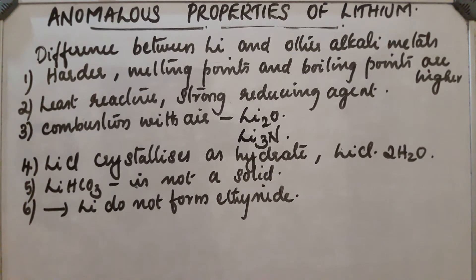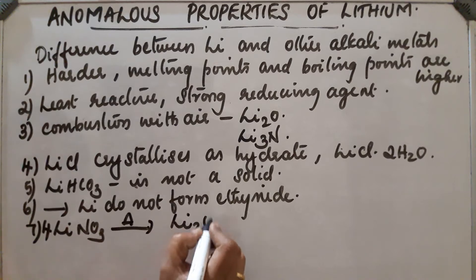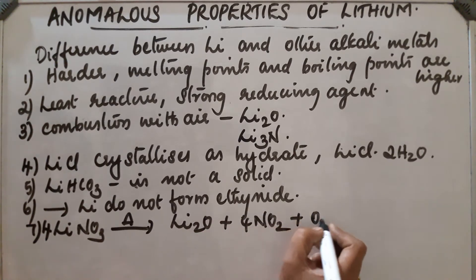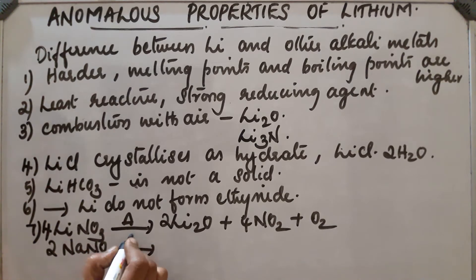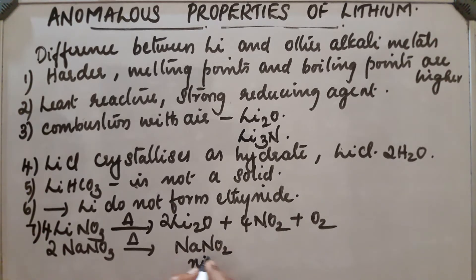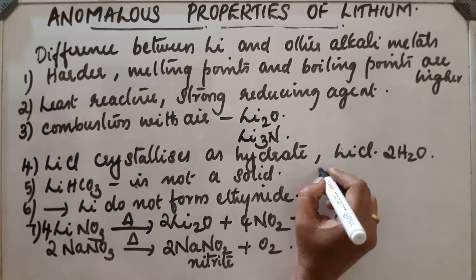Lithium nitrate on heating gets converted into lithium oxide, whereas other alkali metals' nitrates on heating give nitrites. For example, LiNO₃ on heating gives Li₂O, NO₂, and O₂, but NaNO₃ on heating gives NaNO₂ (sodium nitrite). Similarly, other alkali metals yield nitrites, whereas lithium yields lithium oxide.